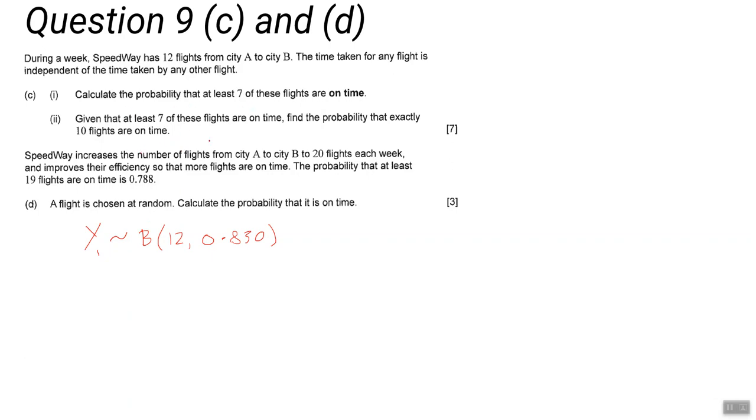So calculate the probability that at least seven flights are on time. That's the probability that Y1 is greater than or equal to seven, and your GDC will answer that for you. Don't forget it's the cumulative binomial distribution because we want greater than or equal to seven.